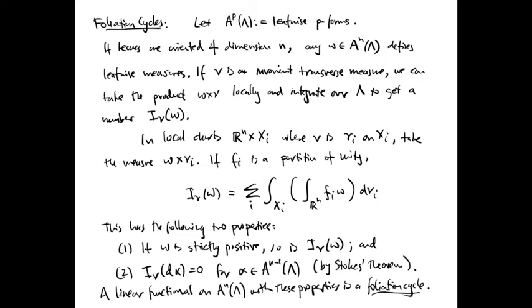The idea of an invariant transverse measure can be translated into the language of functional analysis. In this translation, the resulting object is known as a foliation cycle. Let AP(lambda) denote the space of leafwise smooth P-forms. If our leaves are oriented of dimension N, then any element of A_N(lambda) defines a family of leafwise measures. Given a leafwise N-form omega and an invariant transverse measure nu, we can take the product locally to get a measure on lambda that can be integrated to get a number. Let's call this I_nu of omega.